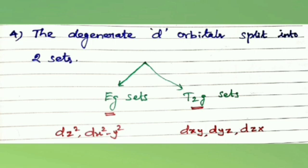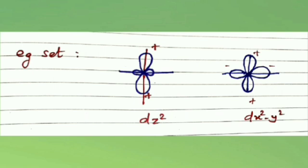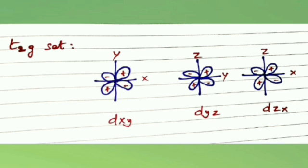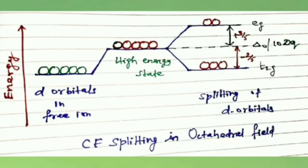When we think about eg sets, it is doubly degenerate. We have dz², dx²-y². The eg sets have their lobes along the axis, that is axial orbitals. There is greater repulsion between lone pair of electrons of ligand and orbitals of the central metal atom. The t2g set has their lobes lying between the axis, non-axial orbitals, and their energies decrease.